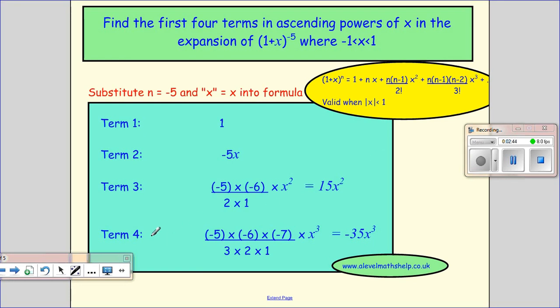And then the fourth term is minus 5 times minus 6 times minus 7, so take one away three times, and that gives you x cubed over 3 times 2 times 1. And that equals when you work it out equals minus 35x cubed. And it is probably nice to write out the first four terms, but this is perfectly clear and this would be fine to get the marks.